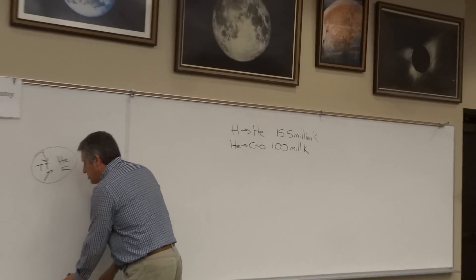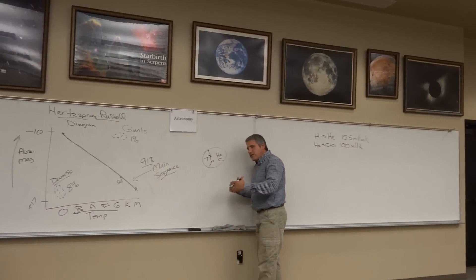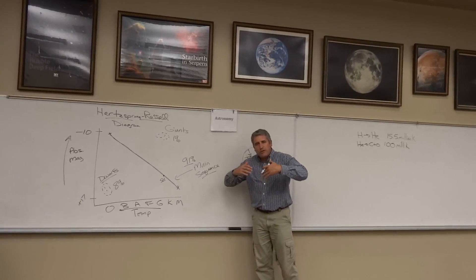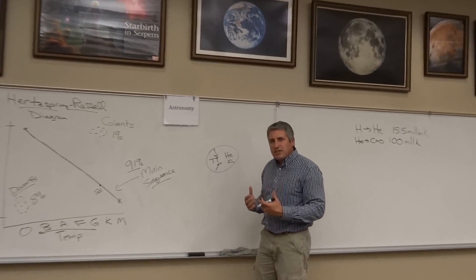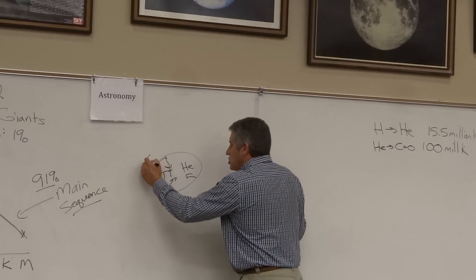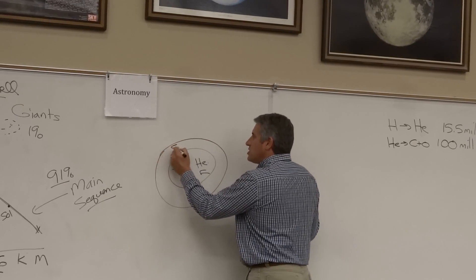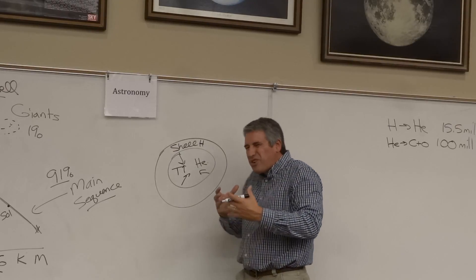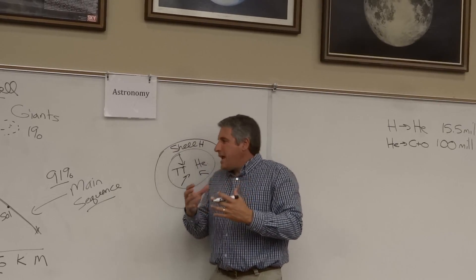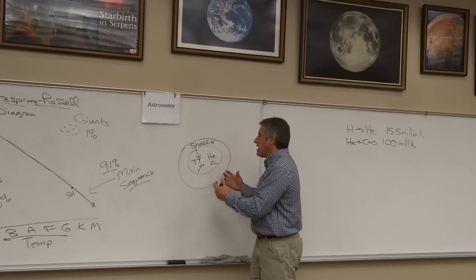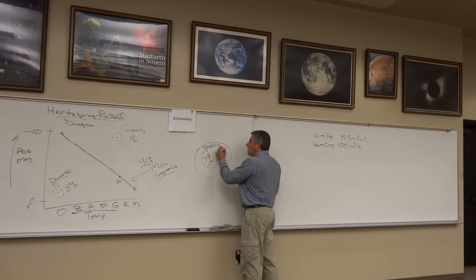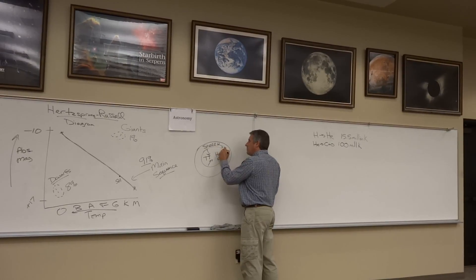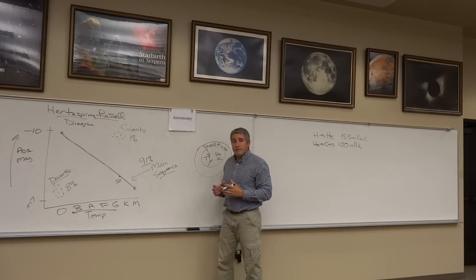So as the core continues to collapse, reaching higher and higher temperatures—20, 30, 40, 50, 60, 70 million Kelvin—there is a shell of hydrogen which exists beyond the core which never got to burn in the first place. It was never in the core to burn. As that shell collapses, it hits a temperature of 15.5 million Kelvin and begins to burn into helium.